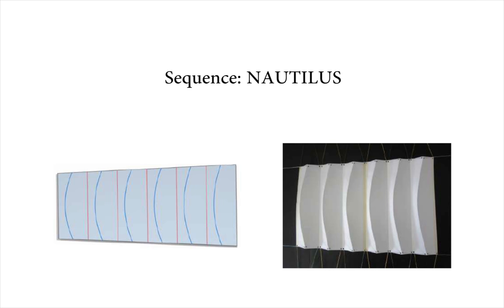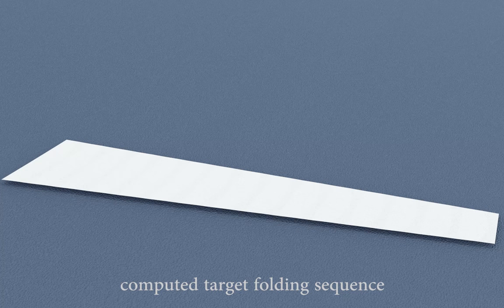The nautilus shape is based on a sphere crease pattern, that is, a pattern that folds to a spherical shape with parts bordered by curved folds, mapping to globe gores.